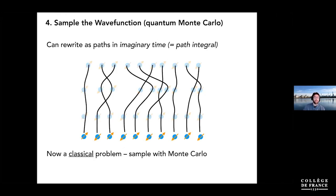Last but not least, you can try sampling the wave function. You can do a formal rewriting of quantum states as large integrals in imaginary time — close to a path-integral formulation of quantum mechanics. For putting things on a computer, this becomes a classical problem, something like the motion of classical polymers, and you use Monte Carlo techniques in this setting to sample the wave function.